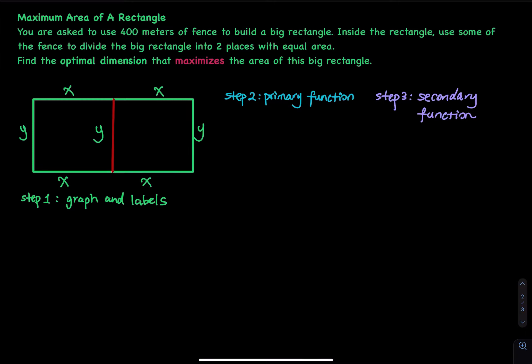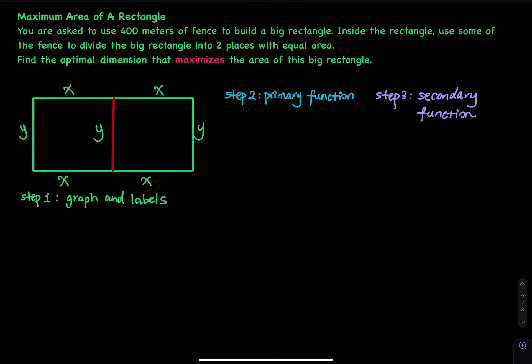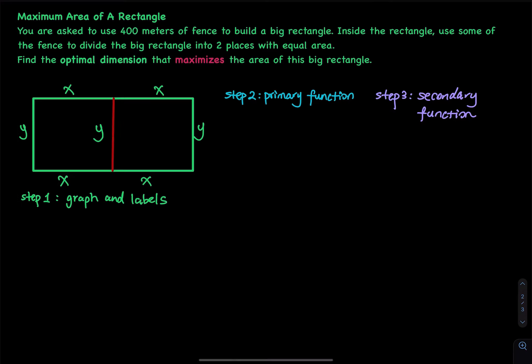This optimization problem asks you to do the following. You have 400 meters of fence. I would like you to build a big rectangle, and then inside this rectangle, I want you to divide it — spend some fence to make a divider. So you'd build a divider to divide the big rectangle into two places with equal area.